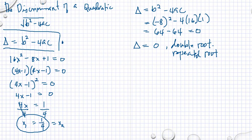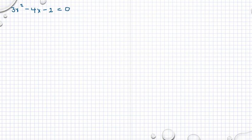Let's take some more examples. We will have 3x squared minus 4x minus 2 is equal to 0. We can solve this by factoring if you can factor it, completing the squares, or by the quadratic formula.